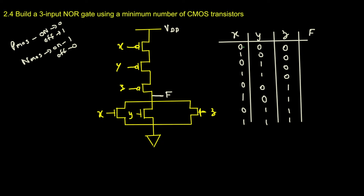For the first row, all three inputs are 0, which means all three PMOS are ON — the path is short-circuited, acting like a wire. So there is a connection between VDD and F, giving an output of 1. Whenever an input is 1, that PMOS is open-circuited — for example if X is 1, this PMOS opens and there is no connection between VDD and F, so the output becomes 0.